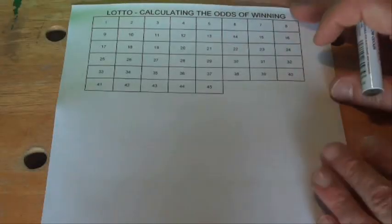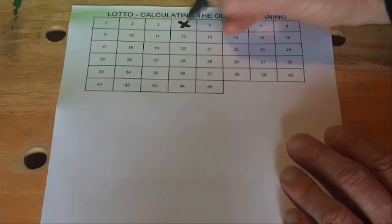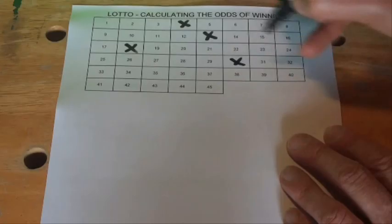Hi there, today I'm going to show you how to calculate the odds of winning the Australian Lotto. We select six numbers out of a total of 45, so I'll select six numbers here to help illustrate the calculations.